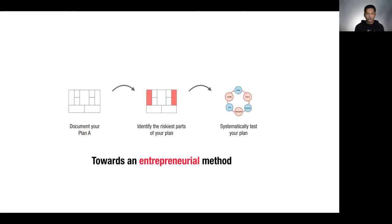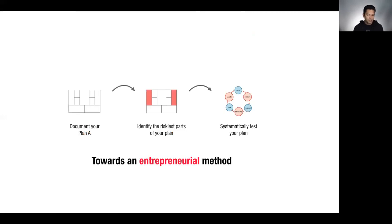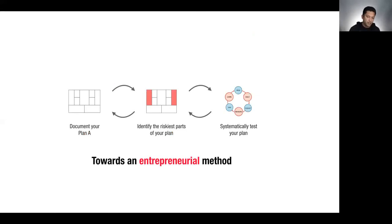The way we test riskiest assumptions is using experiments — the scientific method adapted for the entrepreneurial method. Start with a model, make some predictions, identify what's riskiest rather than what's easiest, and use experiments to mitigate those risks. Some risks will change over time — something risky today may not be risky tomorrow because you've addressed it, and then the risk moves somewhere else. This brings an engineering mindset to business creation — it's not all art; there's actually some science to it as well.